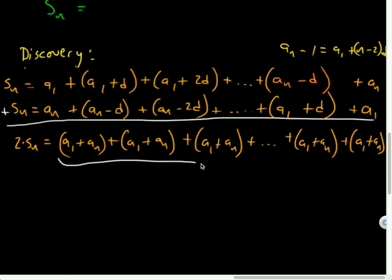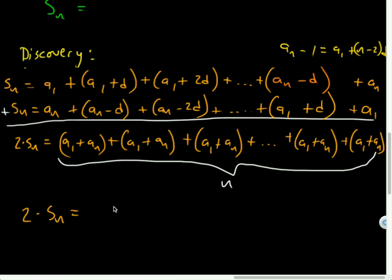And now question, how many A1 plus A Ns are there? N. There are N terms in that sequence. And so this list was N long and now since I've just kind of combined them vertically it's still N many long. So what's another way I could write that? Or I'm just going to write it as N times A1 plus A N. N many of them, repeated addition, can be written as multiplication.